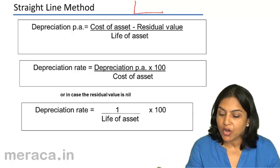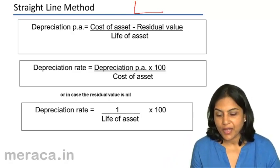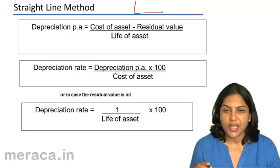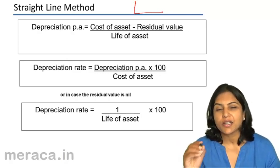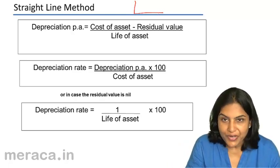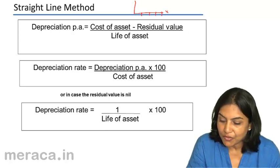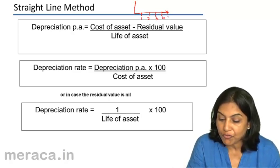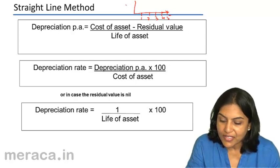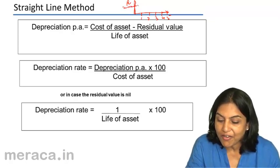Suppose we buy machinery of rupees 1 lakh and it is to be used for 5 years, then the depreciation charge would be 20,000 each year. If we were to present this graphically, on the x-axis I denote the number of years — 1, 2, 3, 4, 5 — being the life of the asset, and on the y-axis the amount of depreciation, which is going to be 20,000 every year.